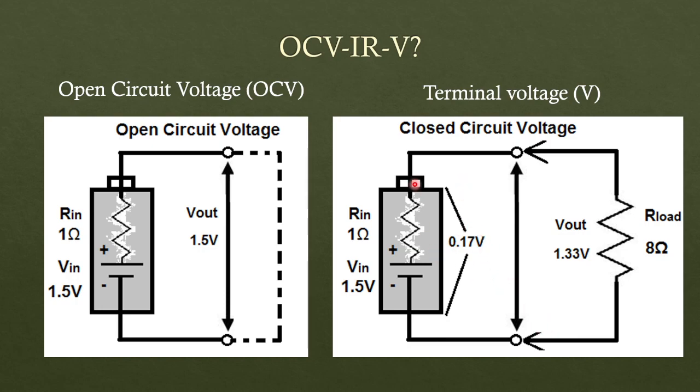Due to this current, whenever a current passes through a resistor there will be a voltage drop, and so is the case for internal resistance as well. Due to internal resistance Rin, there will be a voltage drop across the resistor which is equivalent to 0.17 volts in this case. So finally what you'll get at the terminals is open circuit voltage minus voltage drop across the resistor, which is 1.5 minus 0.17, which is 1.33 volts. So this is known as terminal voltage.